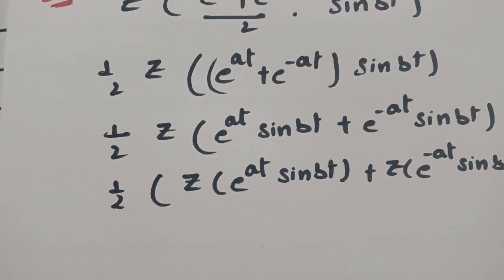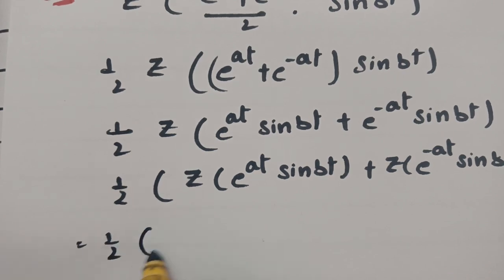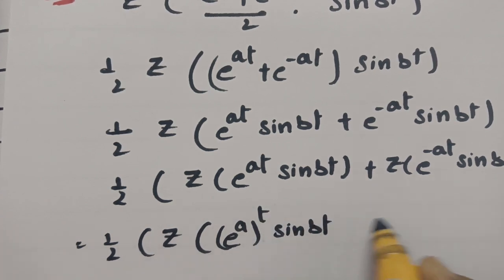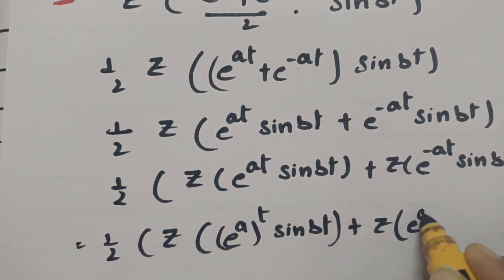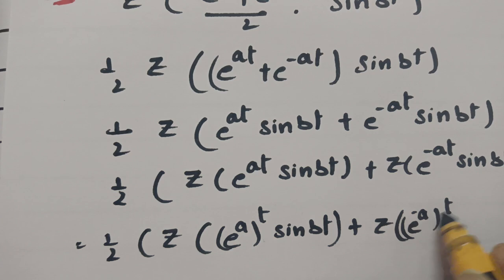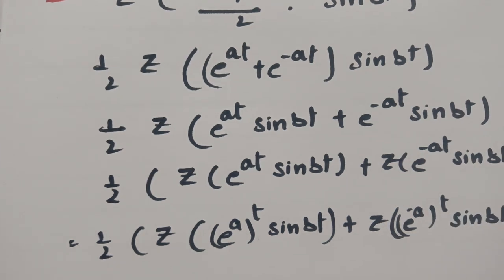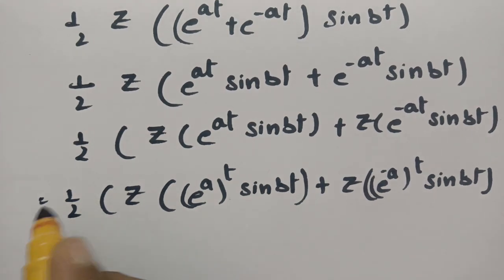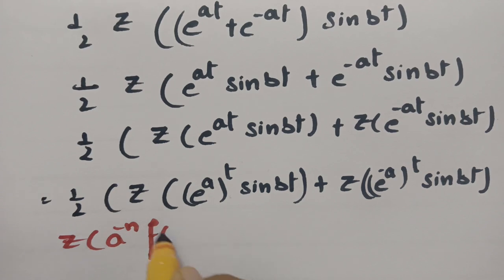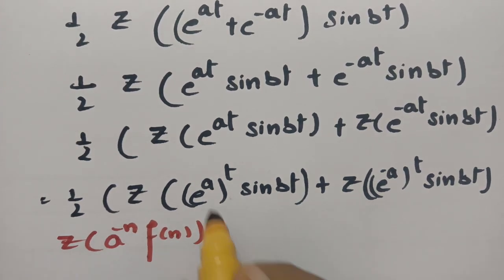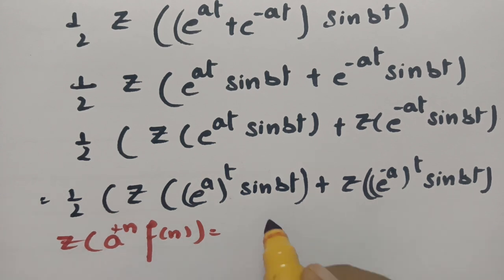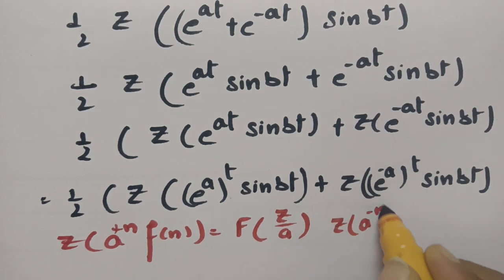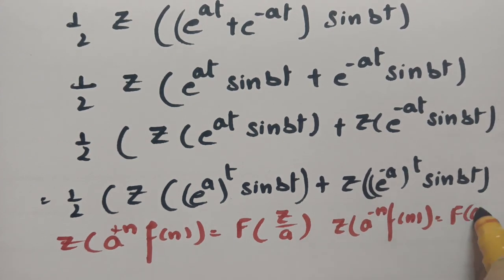Now I am going to use the damping rule. This can be written as e power a whole power t into sin(bt), and the next one is Z transform of e power minus a to the power t into sin(bt). According to our damping rule, Z of a power n into f(n) can be written as F of z by a. And Z of a power minus n into f(n) can be written as F of a into z.